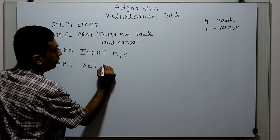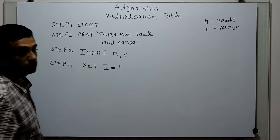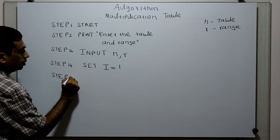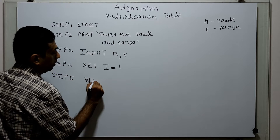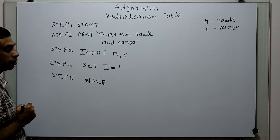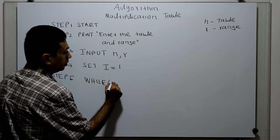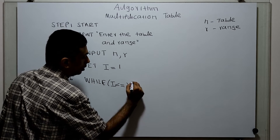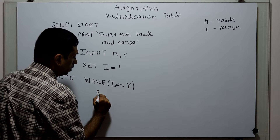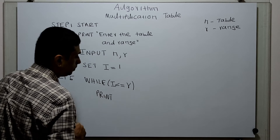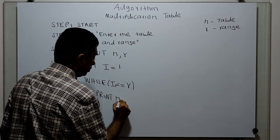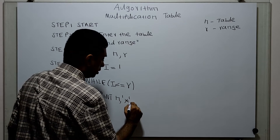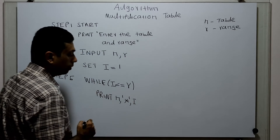Step 4: initialize variable i. Here i is the loop variable, set to 1. Step 5: while — I am adding the looping statement. While the value of i is less than or equal to the range r.